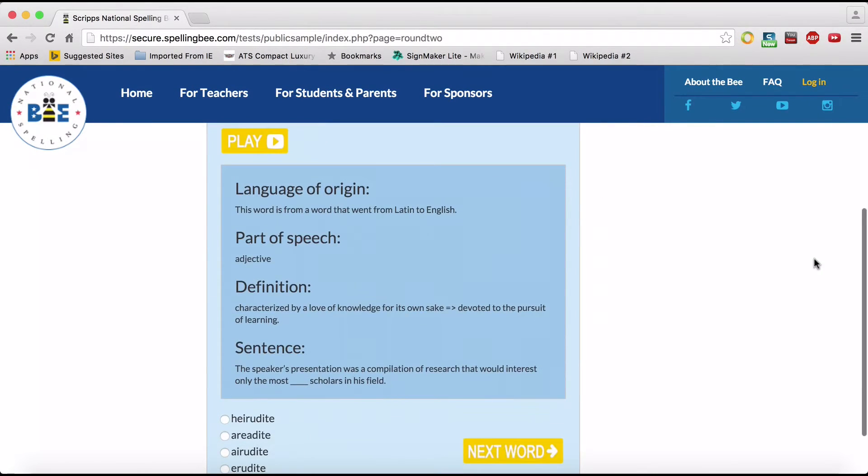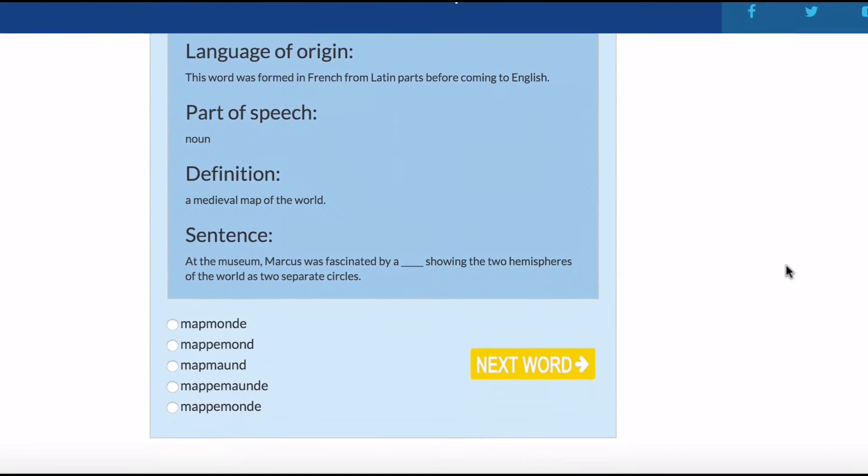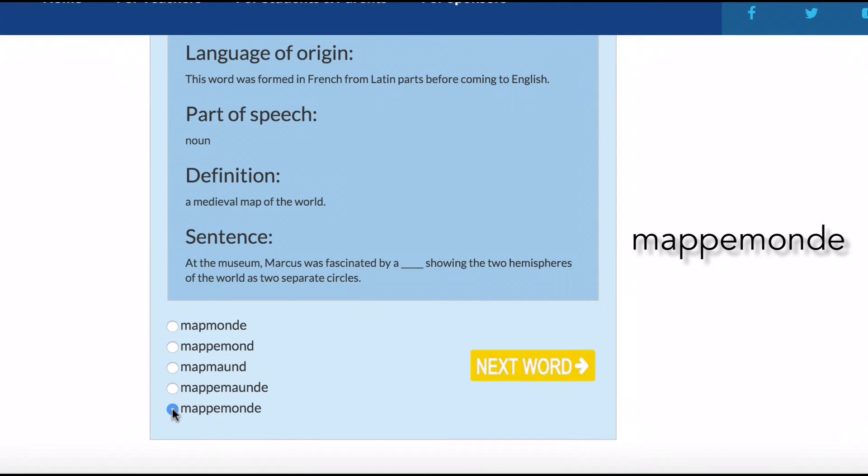This is the hard part. Erudite. It's the second to last one. The fourth one. And map moaned is the latter one.